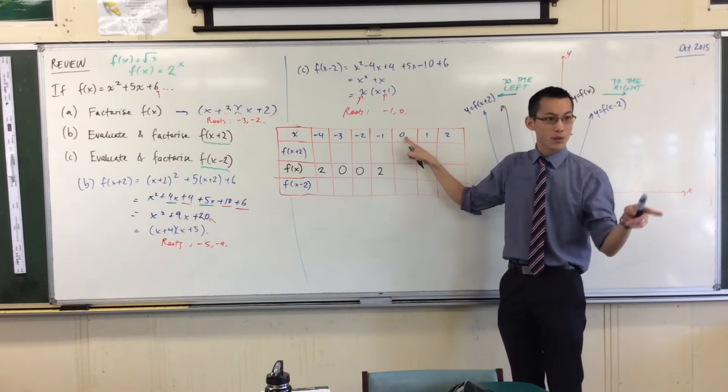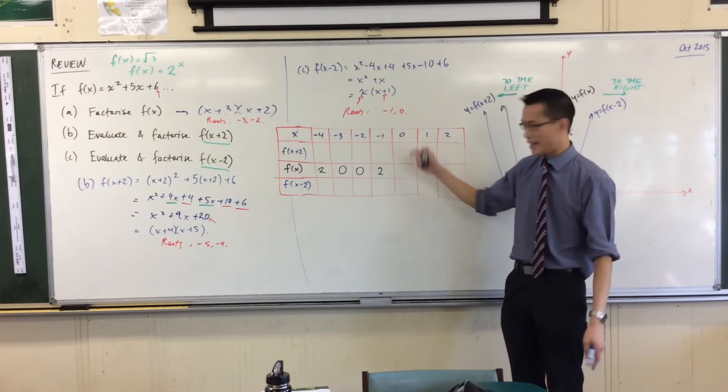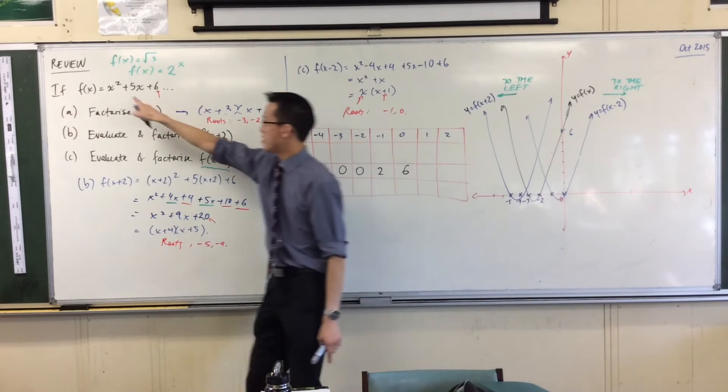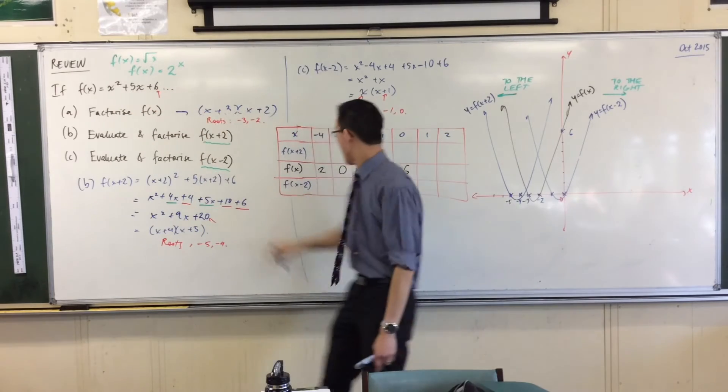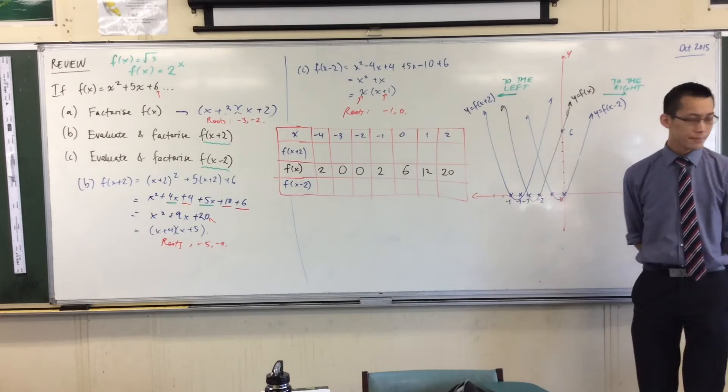Alright, x equals 0. You also know this one. This is the y-intercept. What's the y-intercept of this original graph? It's 6, right? You can see because this is 0, this is 0. You just get left with the 6, right? And I'll just help you out. You get these two more values over here, okay?